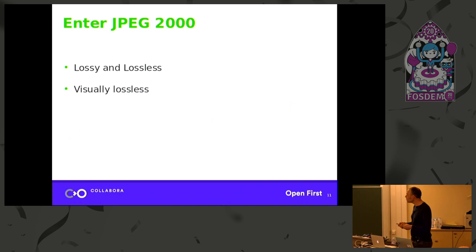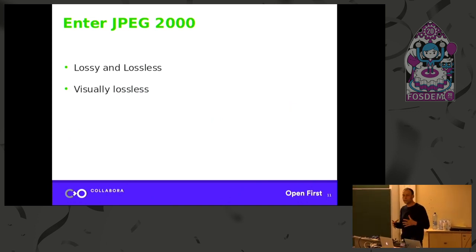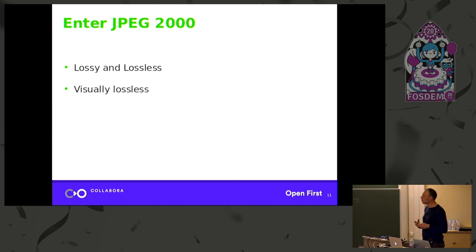And also, it supports lossy and lossless in one framework, which is nice. The only difference between lossy and lossless is the transform is a little different for lossy, and there is quantization where you lose data. But otherwise, the framework is exactly the same. And then you can get visually lossless encoding, where there is loss of data, but the human eye can't detect the difference.